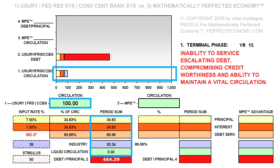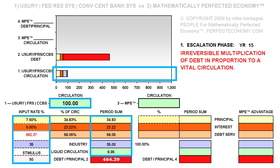So again we must reduce the overall rate of interest because, as we now well understand, a given overall rate of interest applied to one sum of debt places far different unjust burdens than another. Let's this time reduce the overall rate of interest from 7.5% to 5%, noting that once again this proportionally greater 33% reduction of the overall rate of interest brings us just out of the terminal phase. This lower rate of interest will of course multiply the sum of debt at a de-escalated rate.